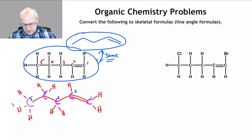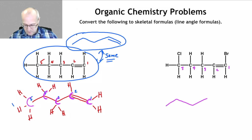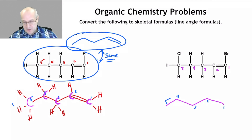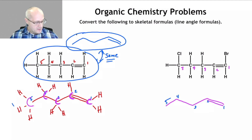Let's do the next one. One, two, three, four, five — let's number the carbons: one, two, three, four, five. Between carbon one and carbon two there's a double bond, so put it there.